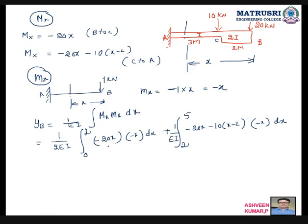If you do the integration here, here, all these things, the final answer will be YB is equal to 986.67 by EI, 986.67 by EI, here 1 by EI.